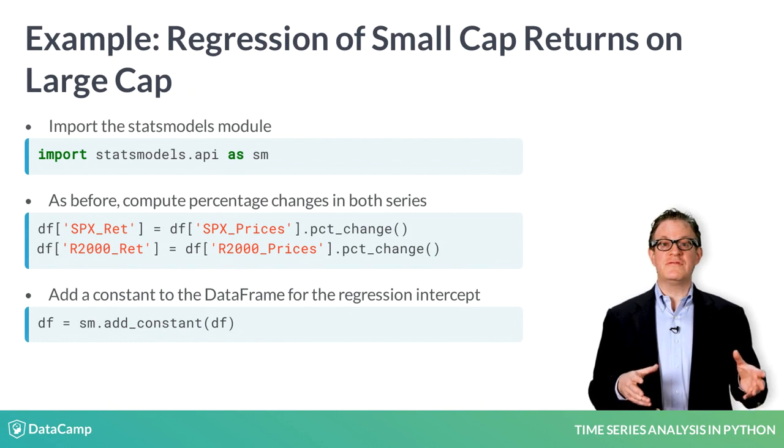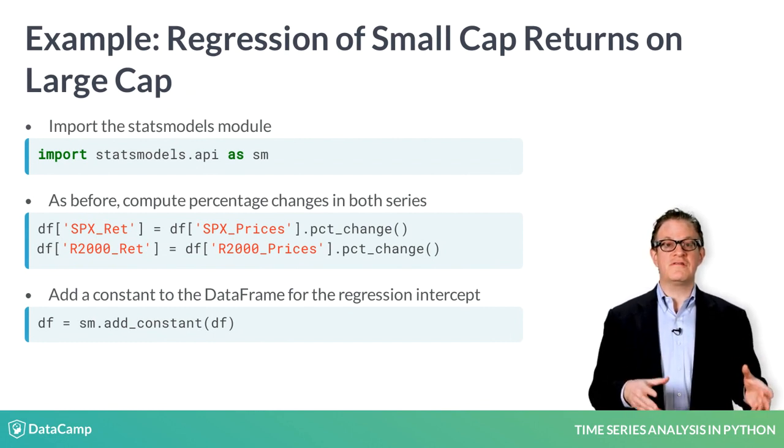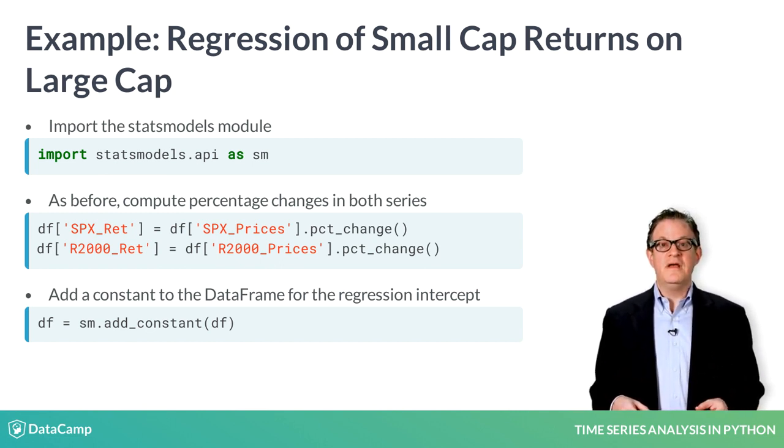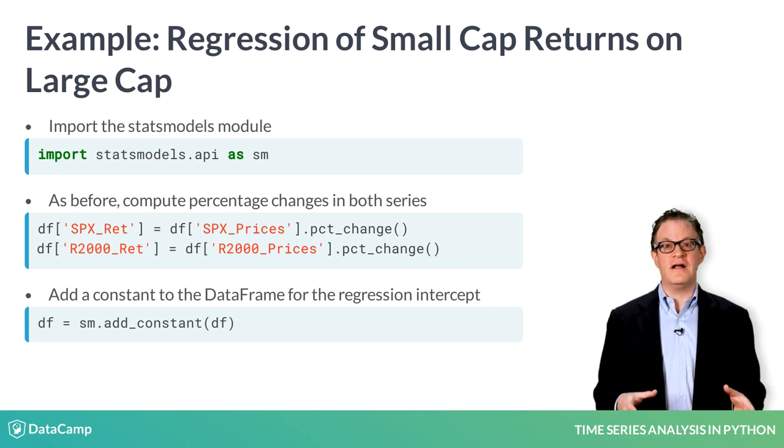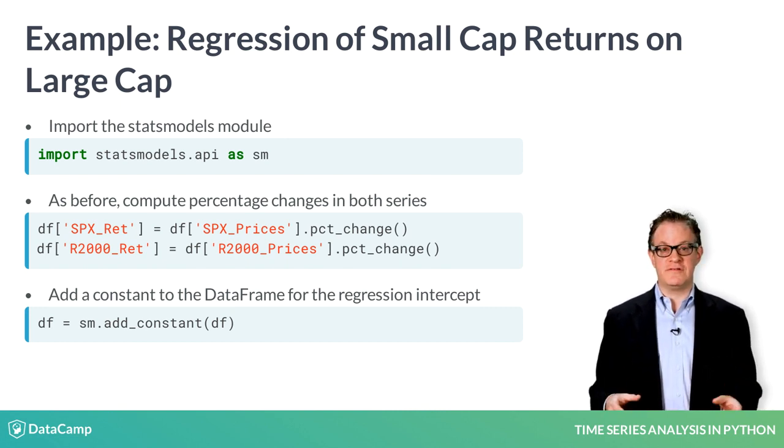Now, you'll regress the returns of the small cap stocks on returns of large cap stocks. Compute returns from prices using the percent change method in Pandas. You need to add a column of ones as a dependent right-hand side variable. The reason you have to do this is because the regression function assumes that if there is no constant column, then you want to run the regression without an intercept. By adding a column of ones, statsmodels will compute the regression coefficient of that column as well, which can be interpreted as the intercept of the line.